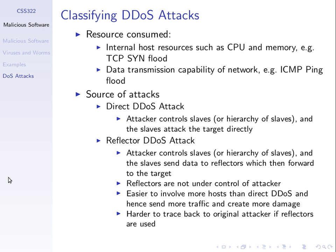In the direct attack, there's just one group — the slaves under control. In the reflector attack, there are two groups: the slaves under control of the attacker, and the reflectors. The slaves are somehow infected by the attacker and will do what the attacker wants. But the reflector machines are not under the attacker's control. What that means is it's easier to get more computers involved.